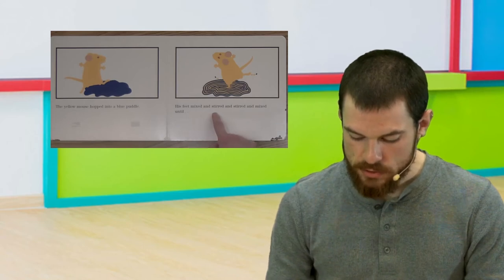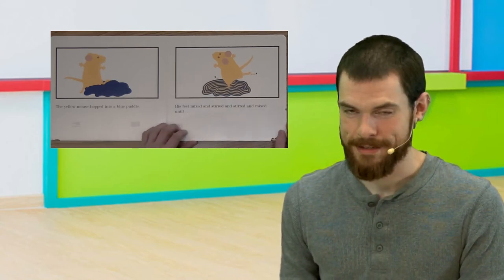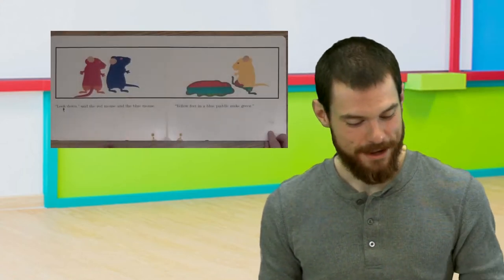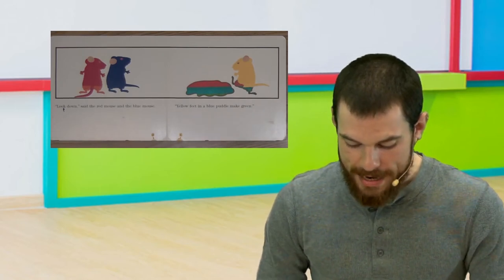The yellow mouse hopped into a blue puddle. His feet mixed and stirred and stirred and mixed until, any guesses on what yellow and blue is going to make? Look down, said the red mouse and the blue mouse. Yellow feet in a blue puddle make green.